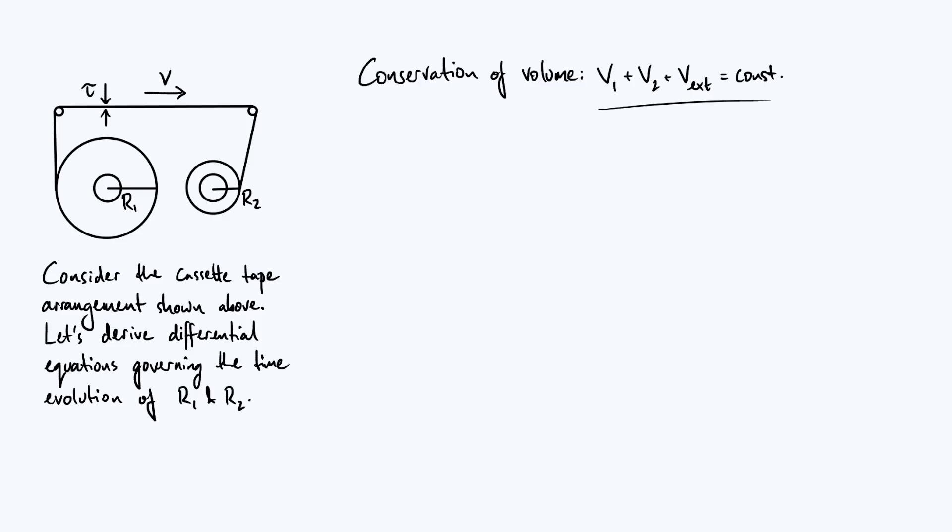This vx is what I'm calling the external volume of tape, which is essentially the volume of this part of tape here, this part of the tape here, and this part of the tape here combined. So that's the tape that is not on any particular spool at a particular instant in time.